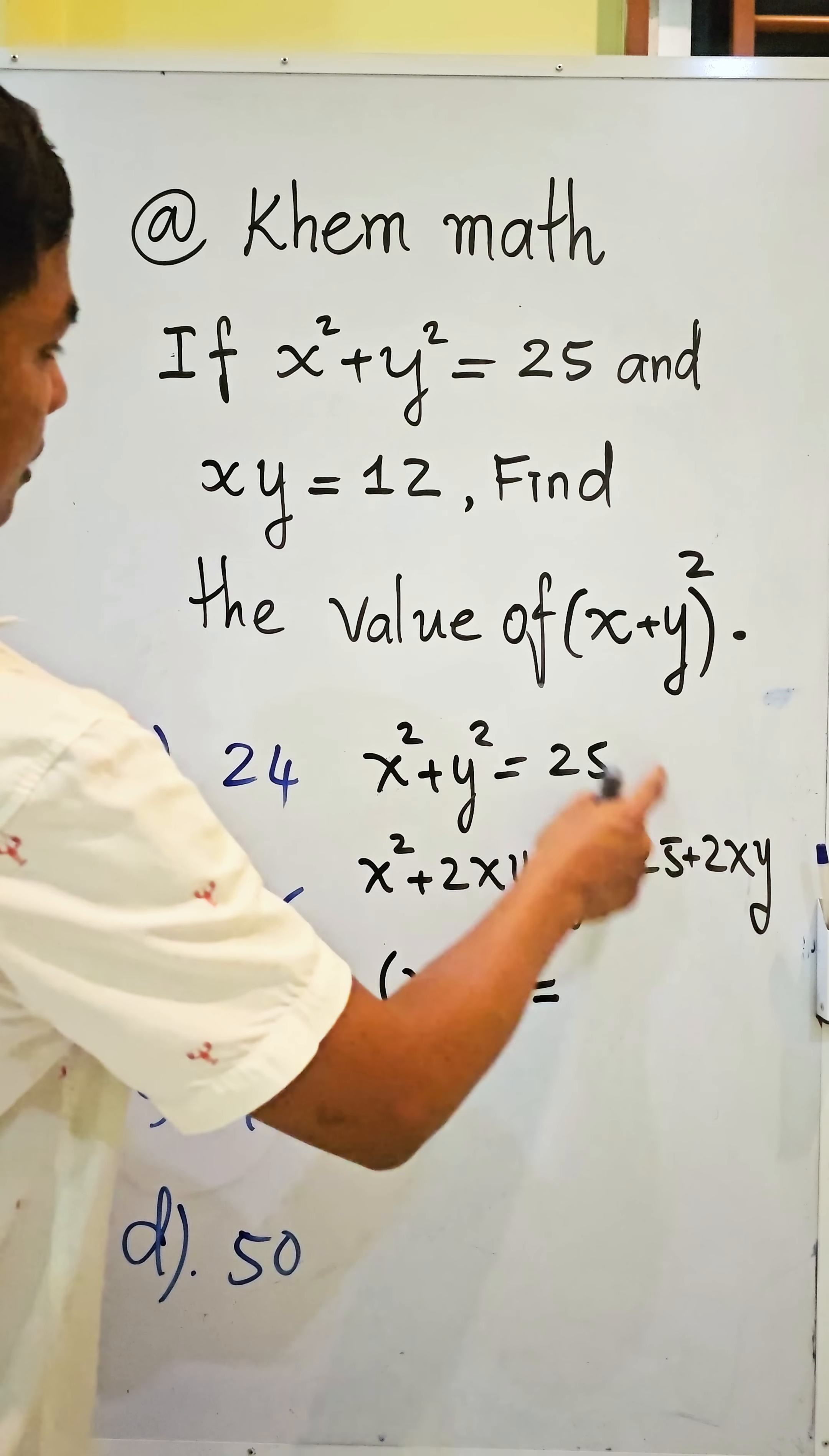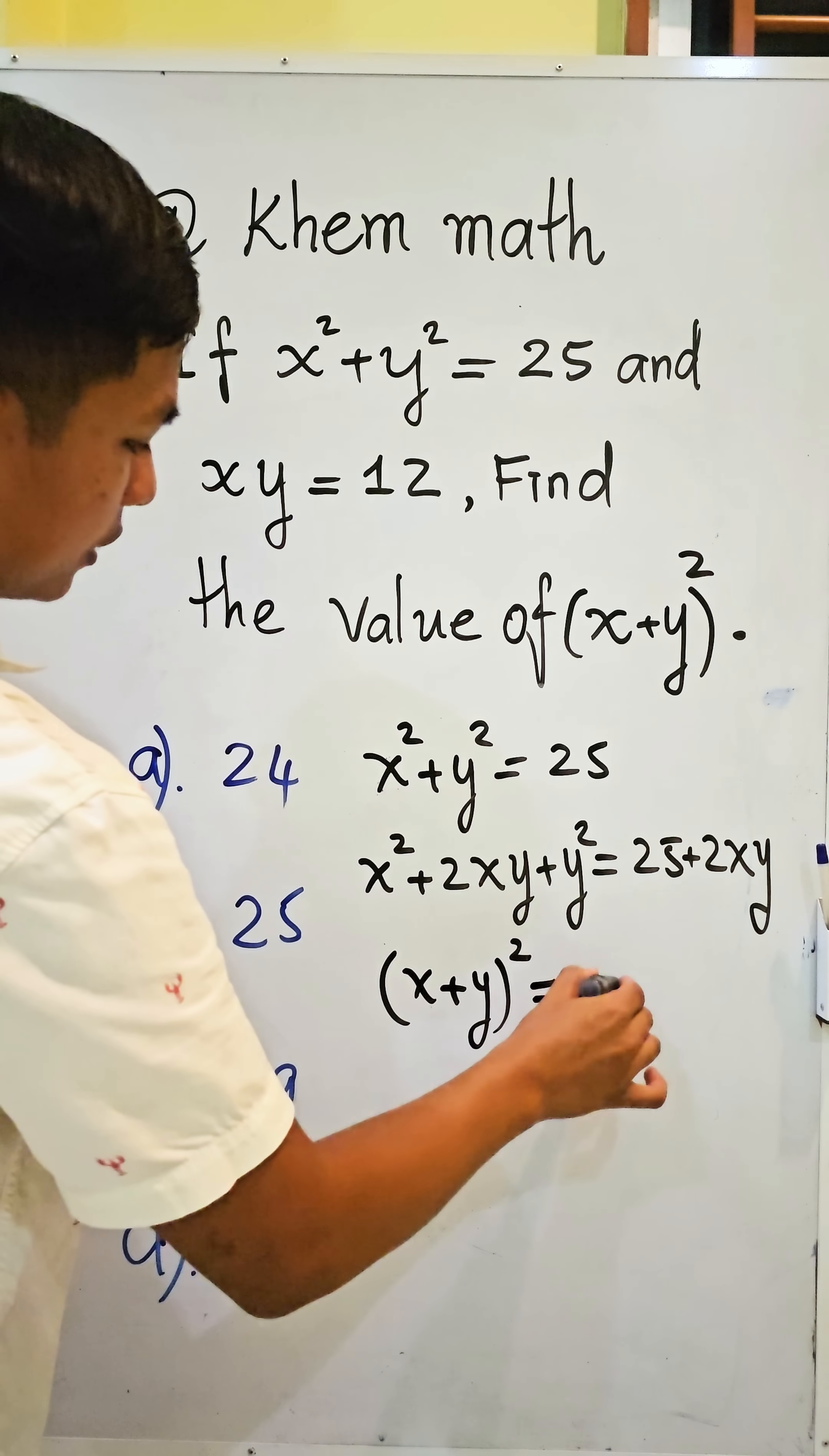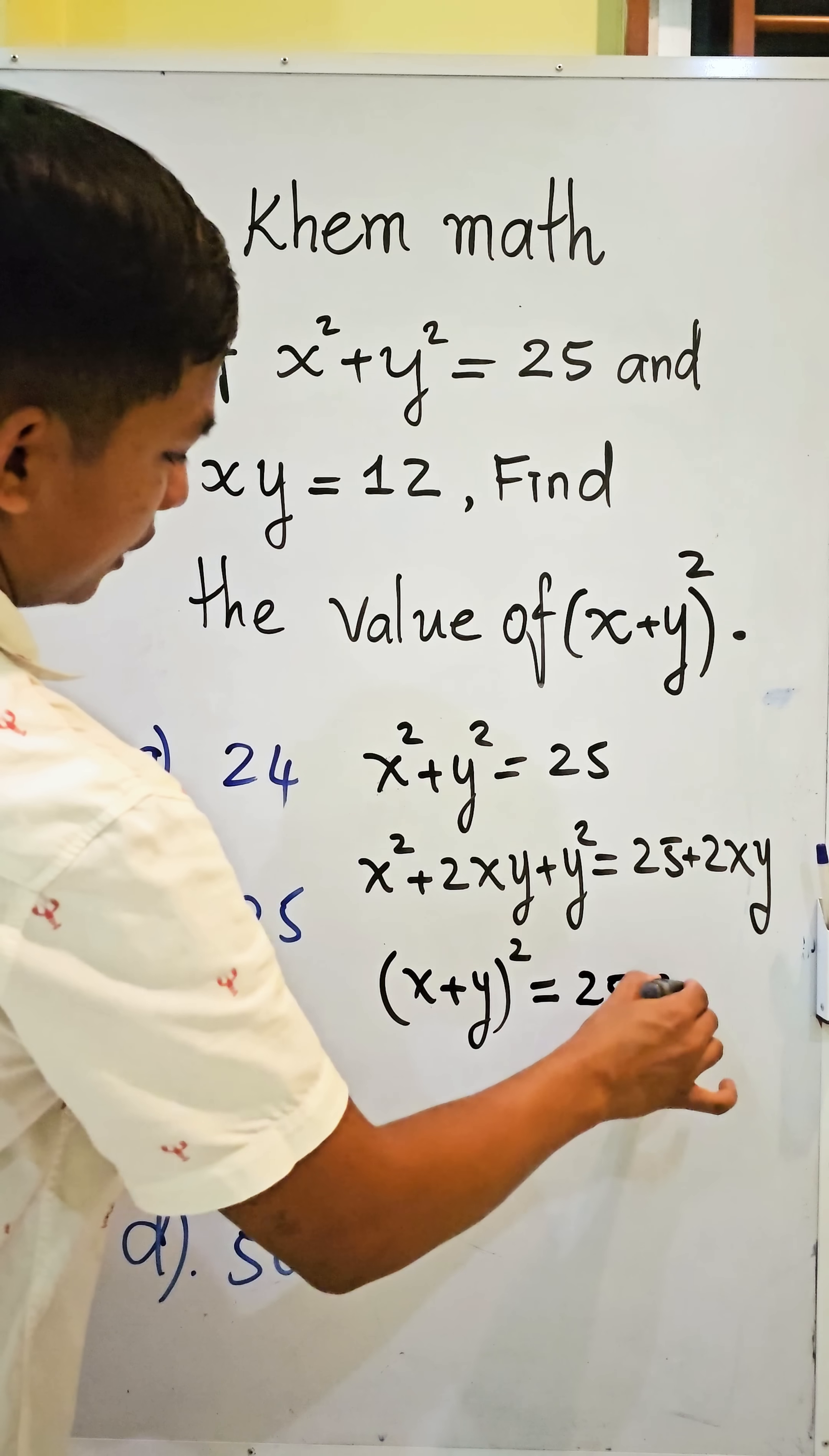x times y is equal to 12. So we replace by 12, we get 25 plus 2 times 12.